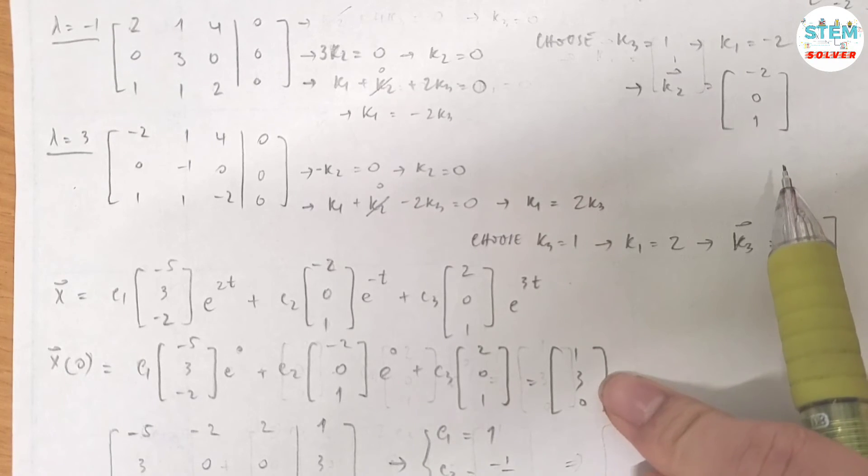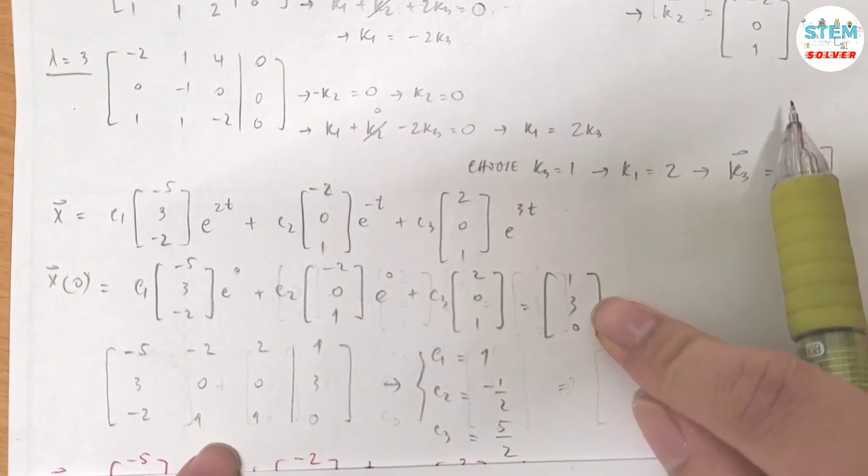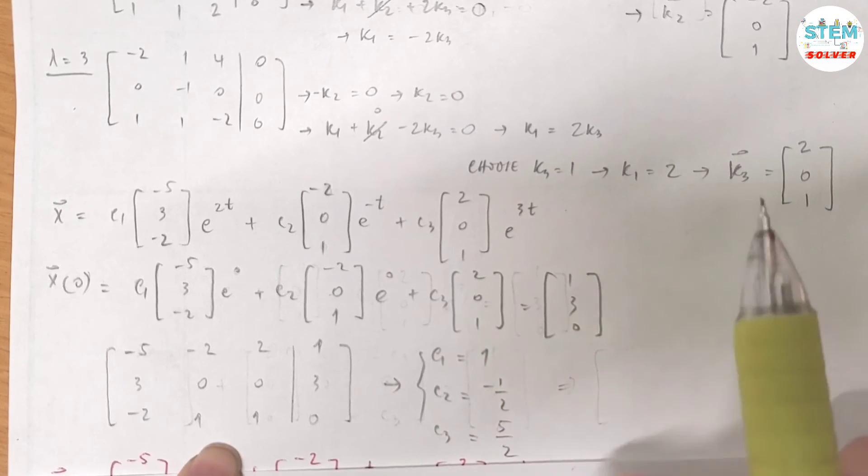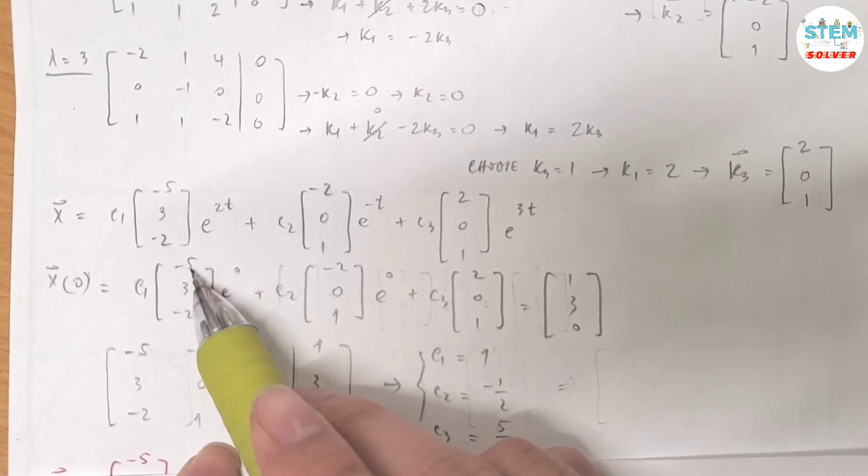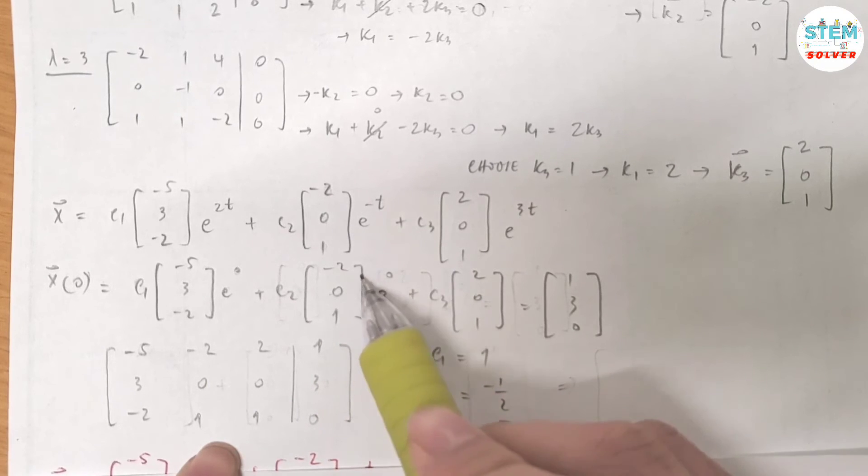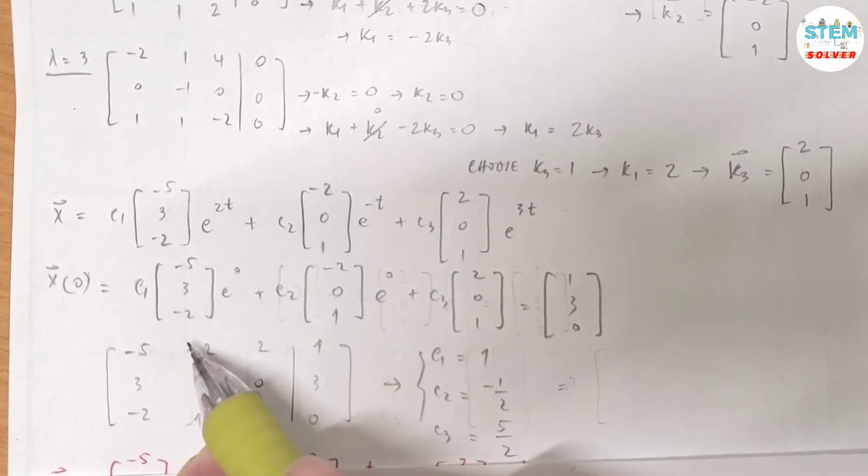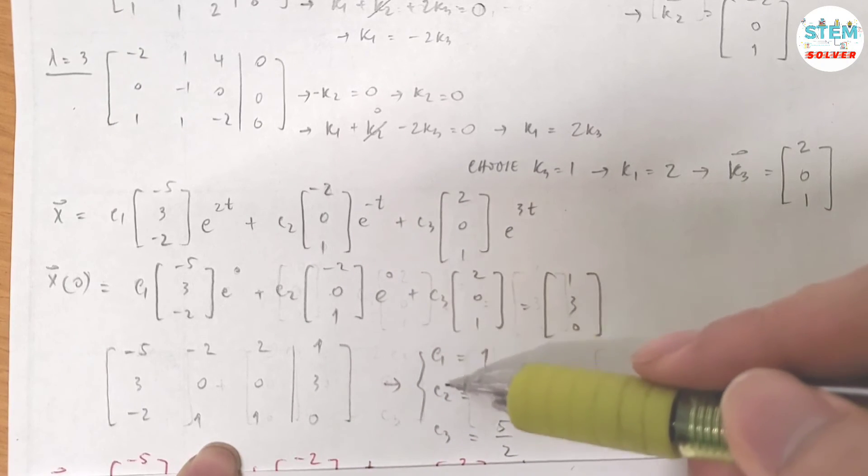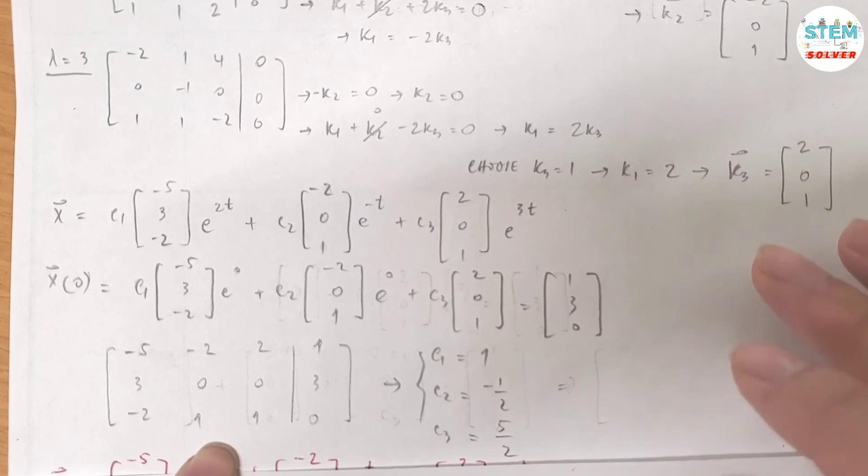Basically just like you have -5x - 2y + 2z equals 1, 3x + 0y + 0z equals 3, -2x + y + z equals 0. Then you put it into a matrix, solve for the unknowns. Similar like that.